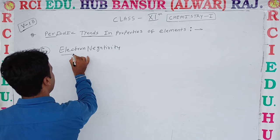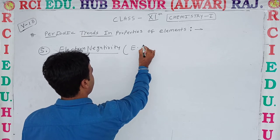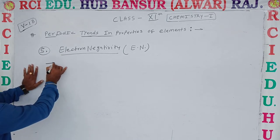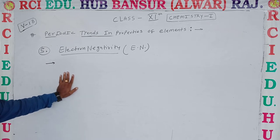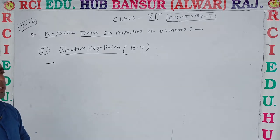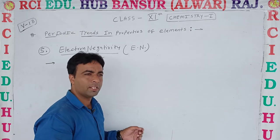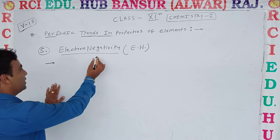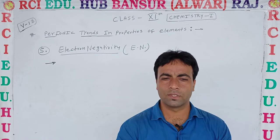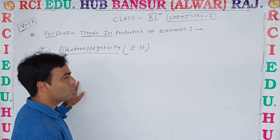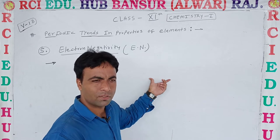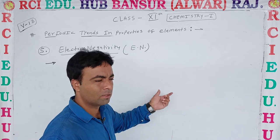Electronegativity is noted by E-N. What is the definition of Electronegativity? It is a very important property of elements for organic chemistry. It is an electrostatic force between atoms which shows the power of an atom to attract the covalent bond electrons to its side.